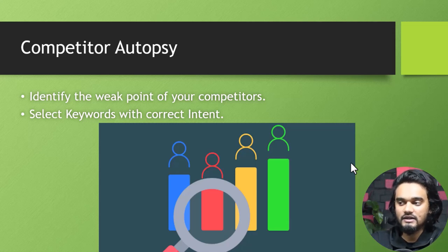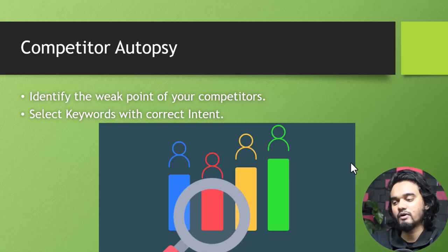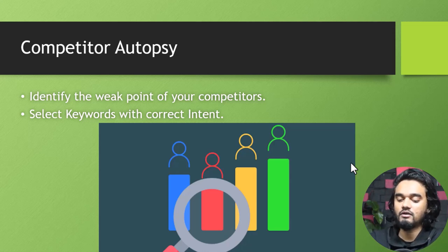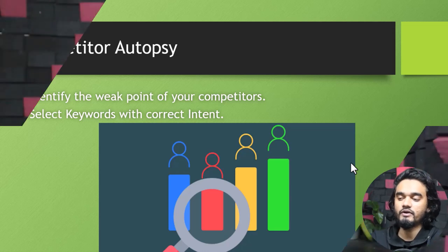Number six: competitor analysis. To find appropriate keywords for your website, you need to identify the weak points of your competitors and select keywords with the correct intent. You'll find many keywords that are out of intent, so collect only those that match your intent or niche. Researching keywords manually is time-consuming, so you'll need a research tool because competitors are already finding dozens of keyword ideas using tools.